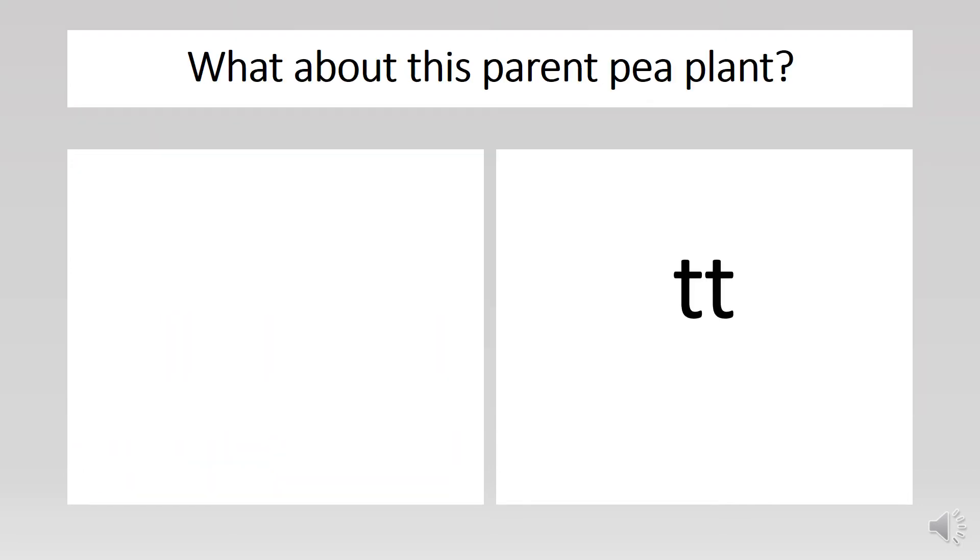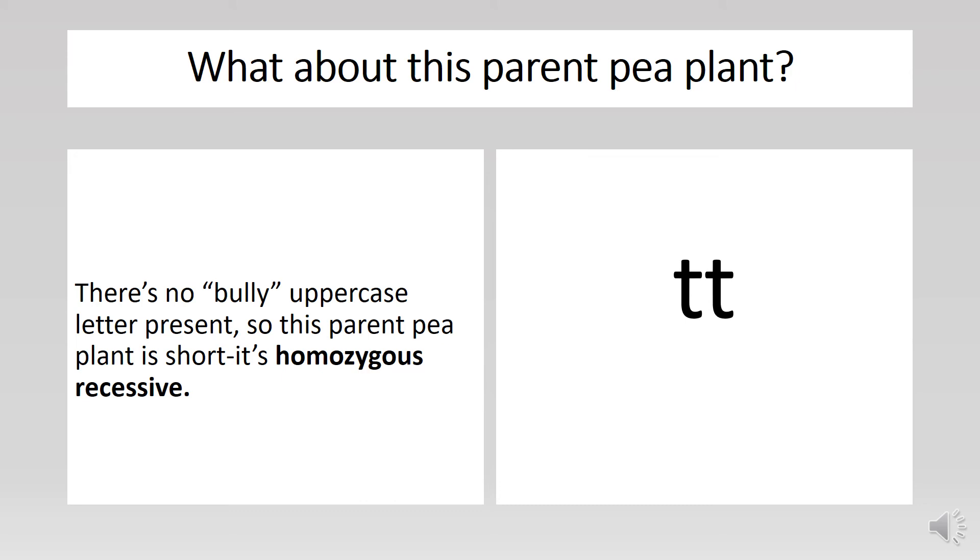What about this parent pea plant? Is it tall or short? I see two lowercase letters, which means there's no bully uppercase letter present. So this parent pea plant is short. It's homozygous recessive.